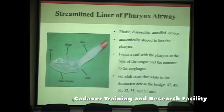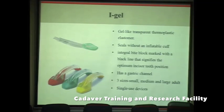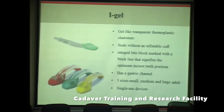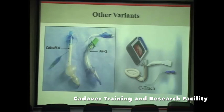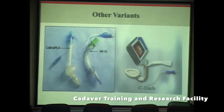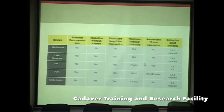The i-gel belongs to the second generation and is made of a gel-like transparent thermoplastic elastomer that seals without an inflatable cuff, reducing pressure-related complications. It has an integral bite block marked with a black line indicating optimum incisor teeth position and includes a gastric channel. Three sizes are available: yellow (small), green (medium), and red (large). These are disposable single-use devices. Other variants include the Cobra PLA and the C-Track, which incorporates a video camera attached to the LMA to facilitate intubation under direct visualization.